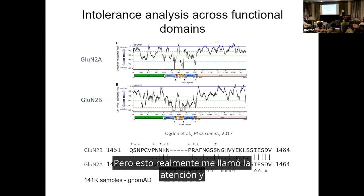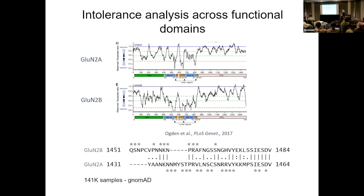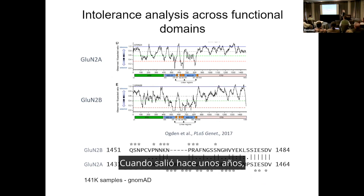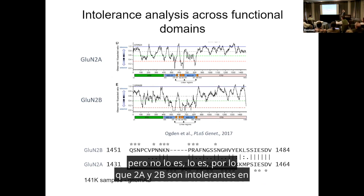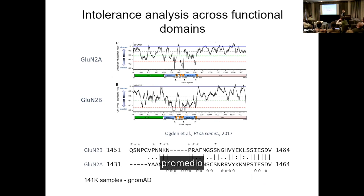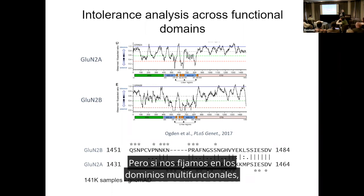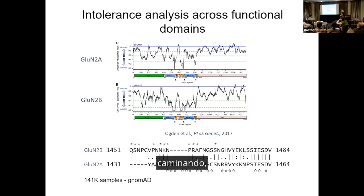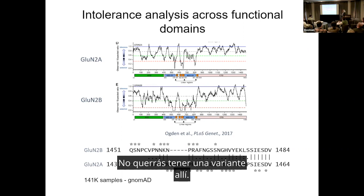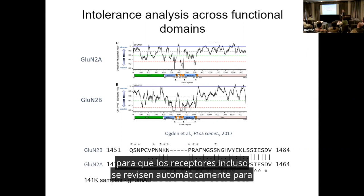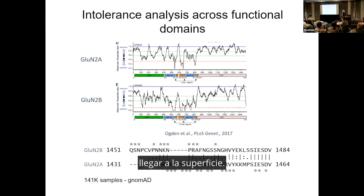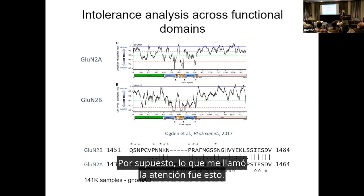This analysis really caught my eye when it came out a few years ago. It looks like a hydropathy plot but it's not. 2A and 2B are intolerant on average compared to other genes. But if you look across functional domains, there are certain places where tolerance crashes to zero — meaning you don't find humans walking around with variants there, for example in the transmembrane domains, which makes sense because such variants would be catastrophic for the receptor to even oligomerize and get to the surface.